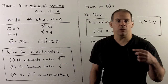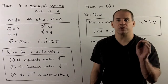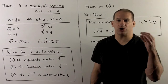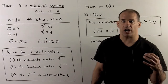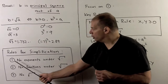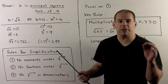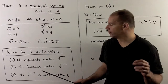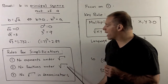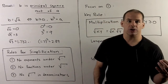If we want to manipulate expressions with radicals in them, we need rules for simplification. We want to apply these rules before trying any operations like addition or subtraction. The first rule: no exponents under the radical sign — that will be the focus of this part. We also want no fractions under the radical sign, and no radicals in our denominators.